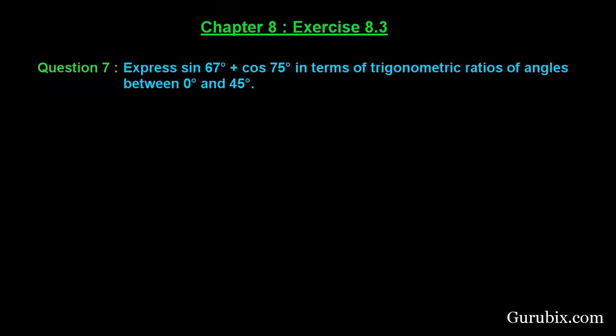Welcome friends. Let us solve question number 7 of exercise 8.3 of chapter 8. The question says: Express sin 67° + cos 75° in terms of trigonometric ratios of angles between 0° and 45°. Let us see how to do it.